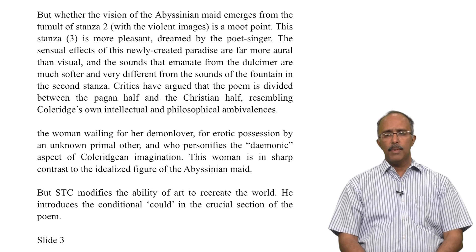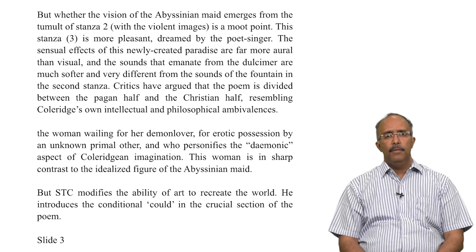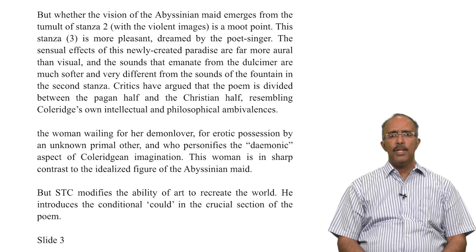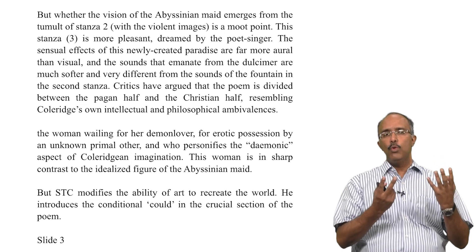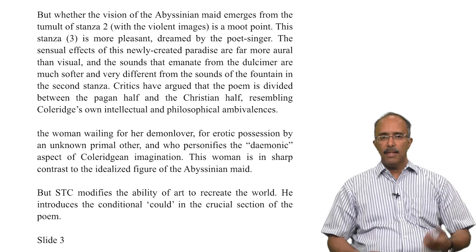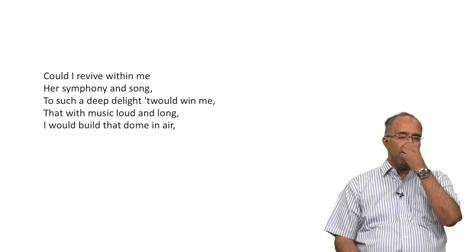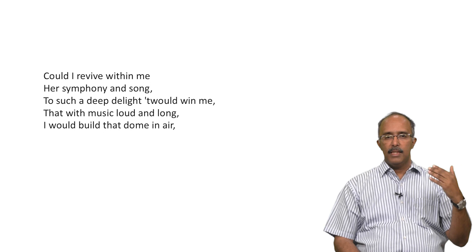Critics have argued that the poem is divided between the pagan half and the Christian half, resembling Coleridge's own intellectual and philosophical ambivalence. The woman wailing for her demon lover — for the erotic possession of the lover by an unknown primal other — personifies the demonic aspect of Coleridge's imagination. This woman is in sharp contrast to the idealized figure of the Abyssinian maid. Coleridge modifies the ability of art to recreate the world by introducing the conditional 'could': 'Could I revive within me her symphony and her song?' — he is not saying 'I will,' he is saying 'could I.'